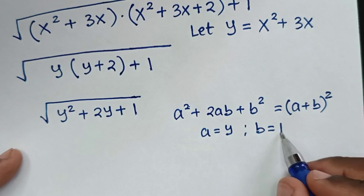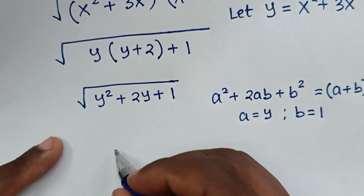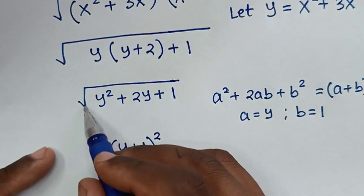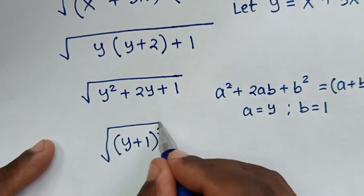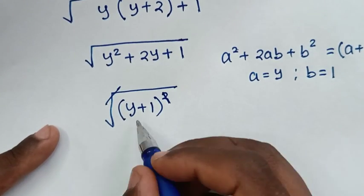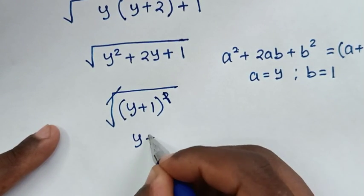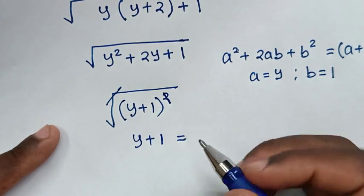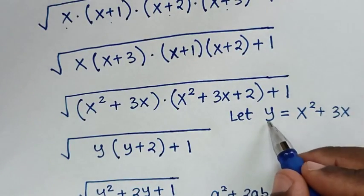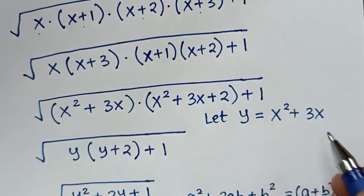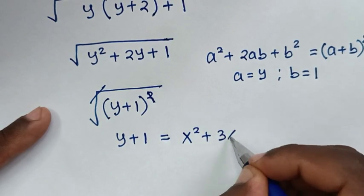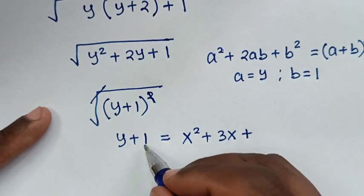Applying the identity, the expression becomes (y plus 1)² under the square root. The square root cancels the square, so the result is y plus 1. Recalling that y equals x² plus 3x, we substitute back to get x² plus 3x plus 1.